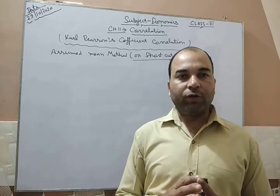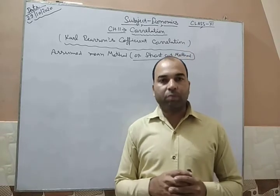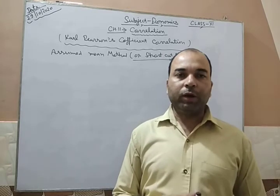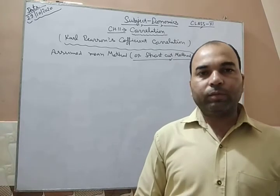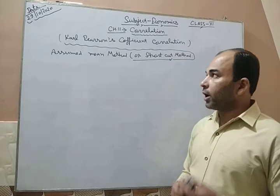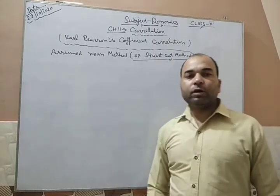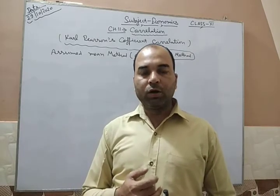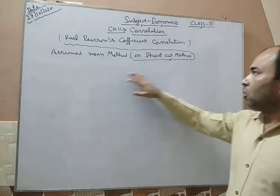I have also explained that there are three types by which we can calculate correlation: the scatter or dot method, calculation of the coefficient of correlation, and Spearman rank correlation coefficient. We explained the dot or diagrammatic method previously. Yesterday in class I started the calculation of the coefficient of correlation, which can be done by three types: direct method, mean method, and shortcut method. I hope you are aware of the direct method. Today we will start the assumed mean method or shortcut method.